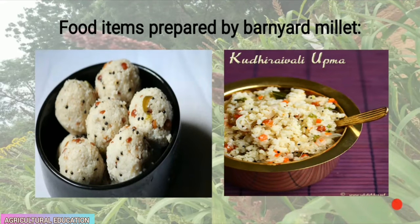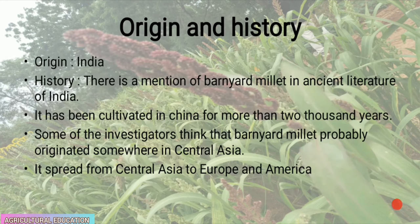Barnyard millet originated from India. There is a mention of barnyard millet in ancient literature of India. It has been cultivated in China for more than 2000 years. Some investigators think that barnyard millet probably originated somewhere in central Asia and spread from central Asia to Europe and America.